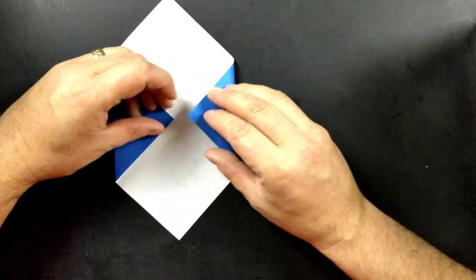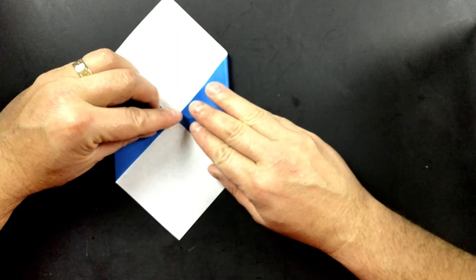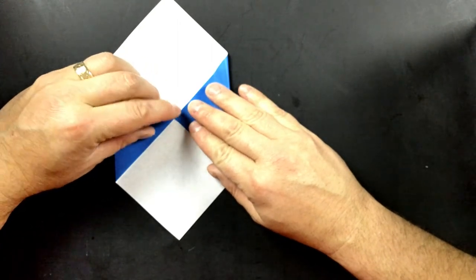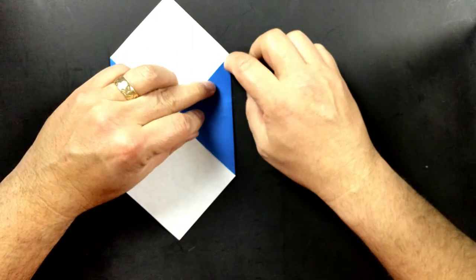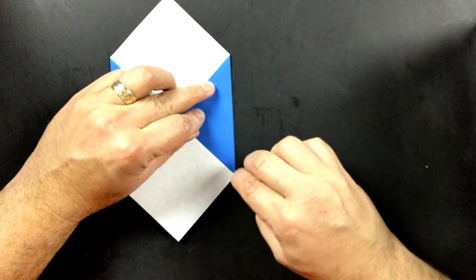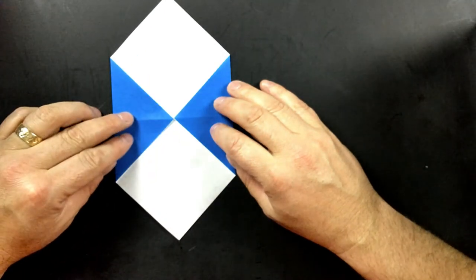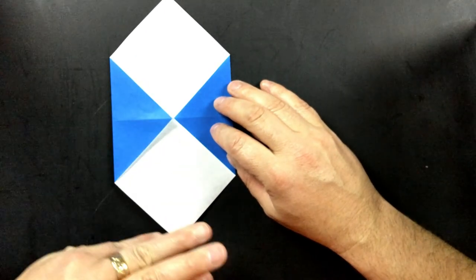You're going to do that on the right as well. And remember, the better you fold it, the better you crease it, the easier it is to create whatever you are creating. In this case, we're making the Scotty Dog.